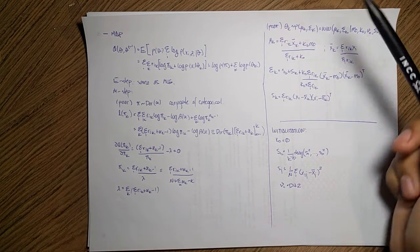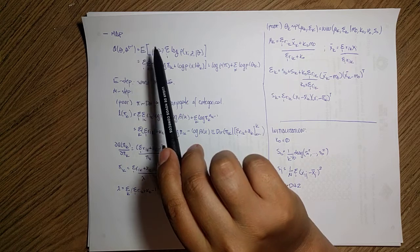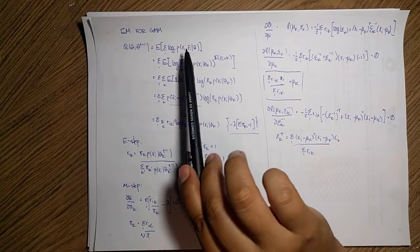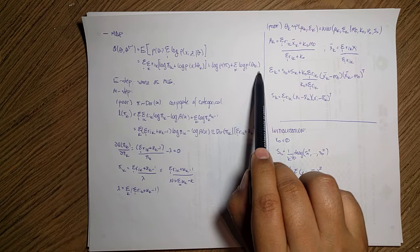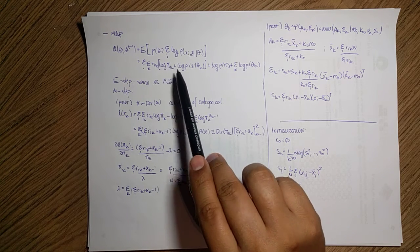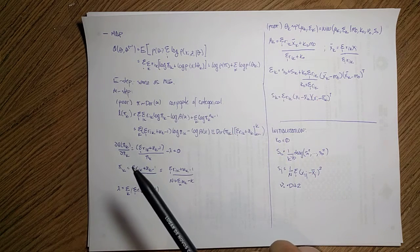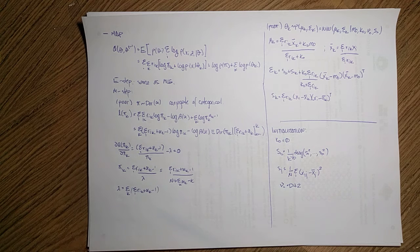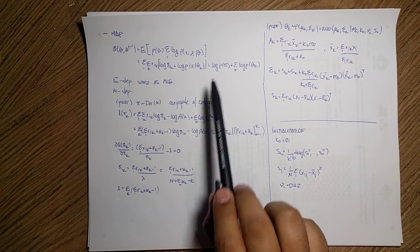For maximum a posteriori estimation we do something very similar: the difference is that we add the prior of the parameters to this likelihood. We expand this prior — it has the prior corresponding to each Gaussian plus the prior of the pi_k's for the categories. The E-step is exactly the same: we just compute the responsibilities as before. What changes is the maximization step, because now we have a prior distribution. For the categorical we assume a Dirichlet with hyperparameters alpha, since this is the conjugate prior of a categorical.